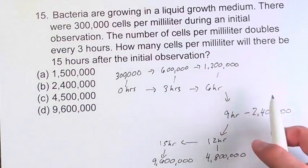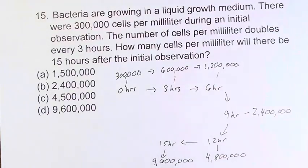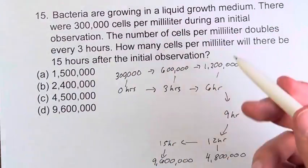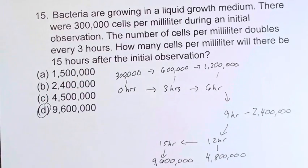So, if we're doubling five times, doing it one step at a time, we're going to end up at 9,600,000. So this is the number of cells per milliliter at 15 hours. D, 9,600,000 is going to be your final answer.